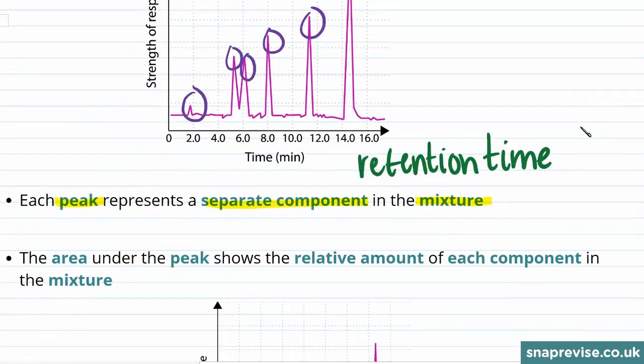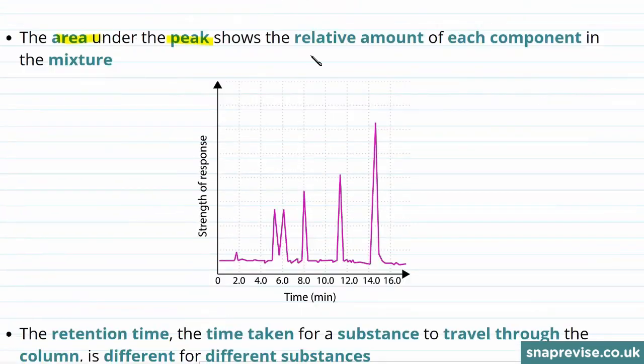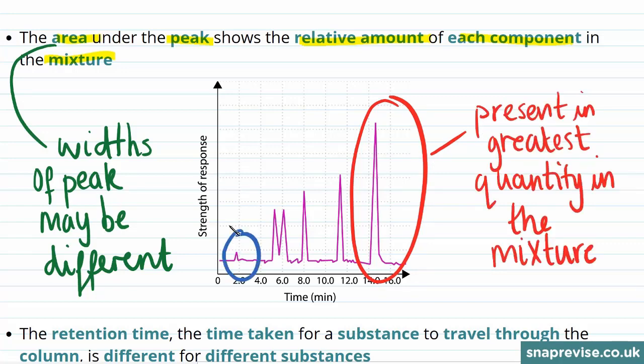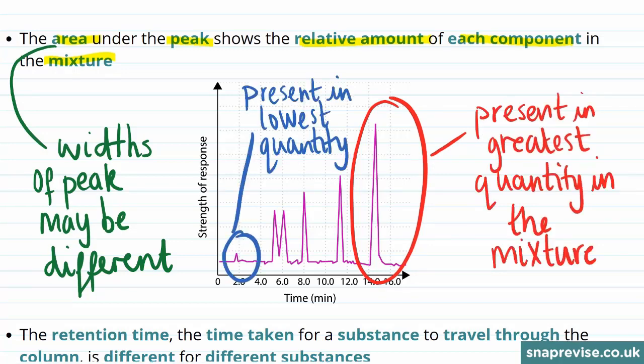The chromatogram is additionally useful because the area under the peak in each case indicates the relative amount of each component that was present in the mixture. It is important to compare the areas and not just the heights, because the widths of the peak may be different. Still, in this example, you can clearly see that this component was present in the highest amount in the mixture, and that this component was present in the lowest quantity in the mixture.